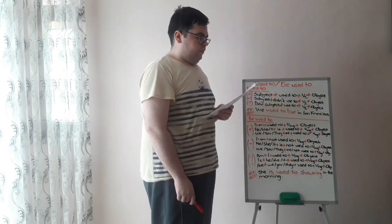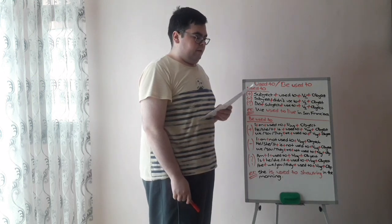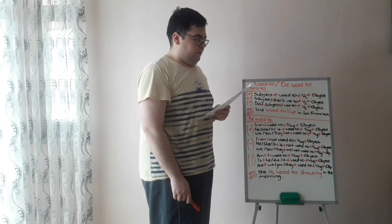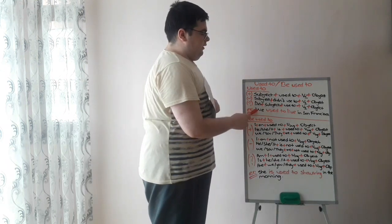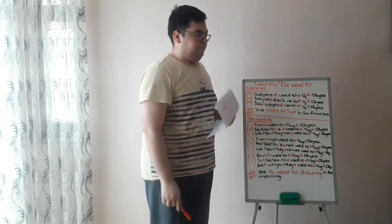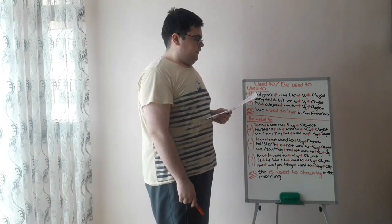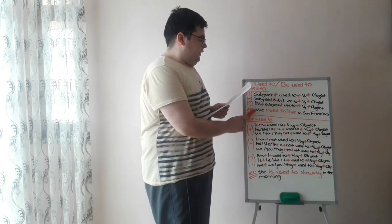Used to always refers to the past. It is used to talk about habits, states or facts that were true before but which aren't true now. Let's look at our example: We used to live in San Francisco. This sentence means that we lived in San Francisco before, but we don't live there now.